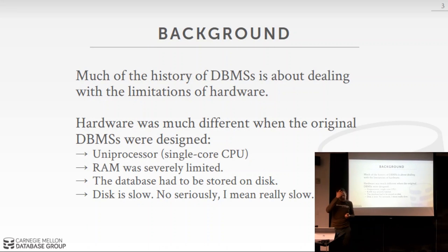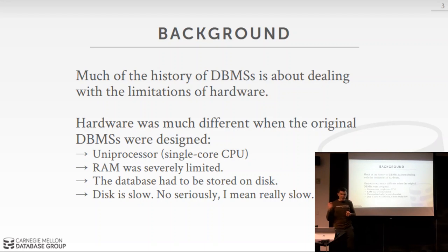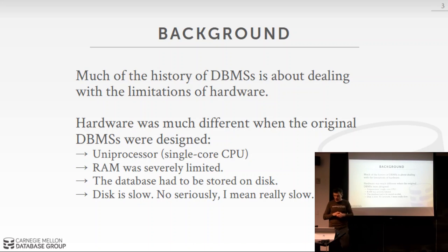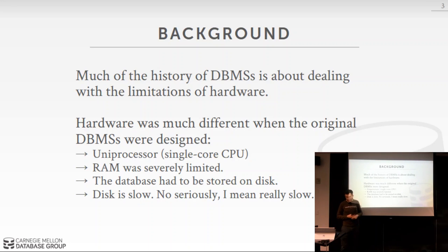The last class covered the history of database management systems — really a history of data models. Starting with IDS and the CODASYL network data model, then the hierarchical data model in IMS, then the relational data model with Ingres and System R. The relational model won out in the early 1970s and is still the dominant data model today. The overarching theme is that all these systems were inherently disk-oriented.